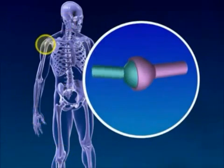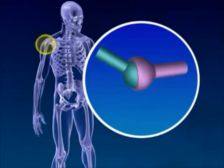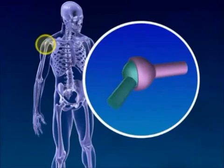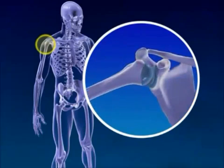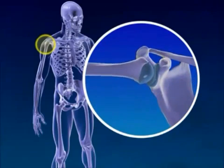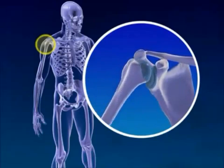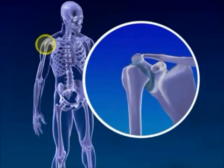So the first joint is a ball-and-socket joint. This is a tri-axial joint which allows it to have three degrees of motion. It allows movement in all directions. Examples of this include the shoulder and the hip.